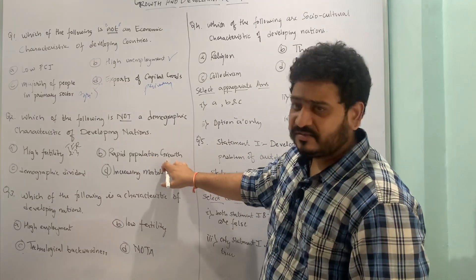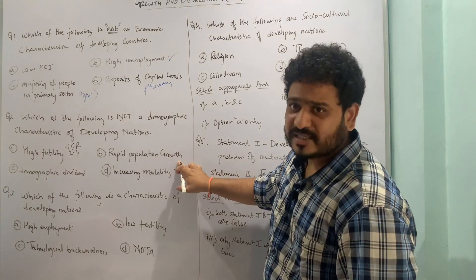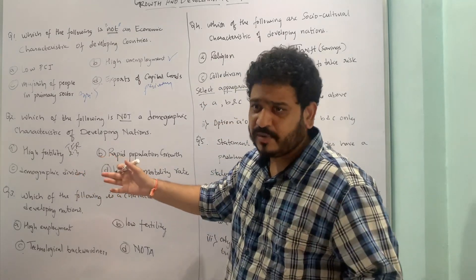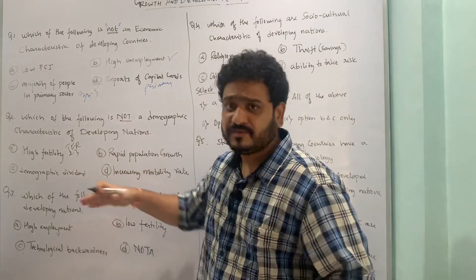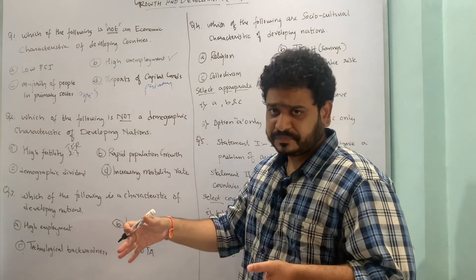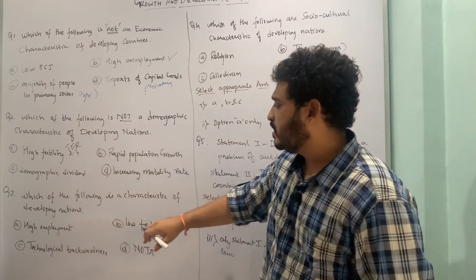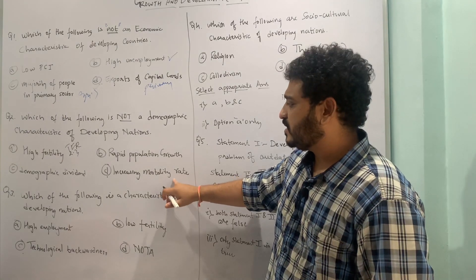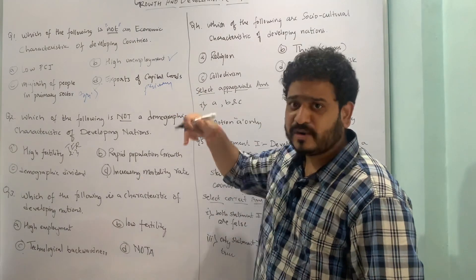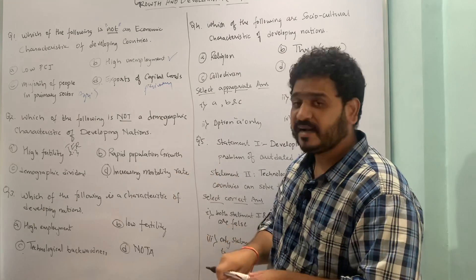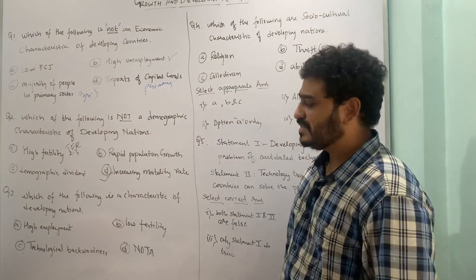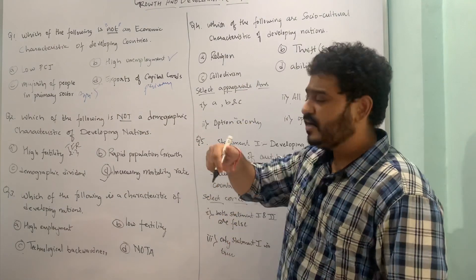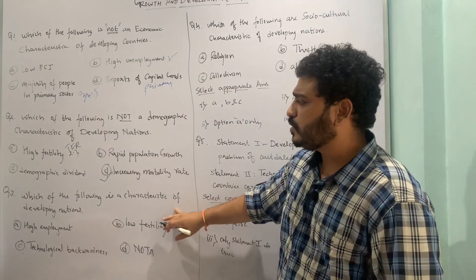We also have rapid population growth — indeed a problem — and demographic dividend, as India has the youngest population from 2020 to 2030. The last option is increasing mortality rate. This is NOT a demographic characteristic of developing nations; rather, we have a decreasing mortality rate. So the correct answer is D: increasing mortality rate.